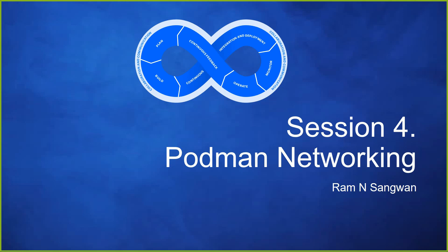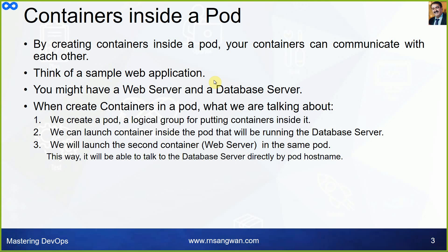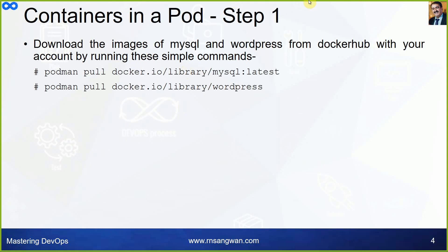This session covers podman networking: how we create networks, how container networking works, running multiple containers inside one pod, and exposing container ports. By creating containers inside a pod, your containers can communicate with each other. Think of a sample web application — you might have a web server and a database server. We create one pod, a logical group for putting containers inside it, then launch both containers so they can talk to each other directly by the pod hostname — like a local network.